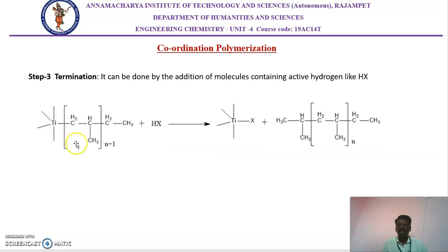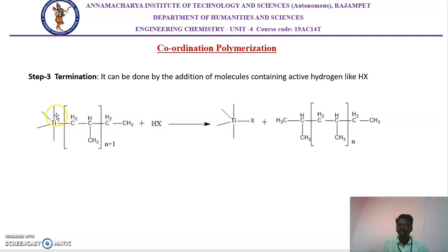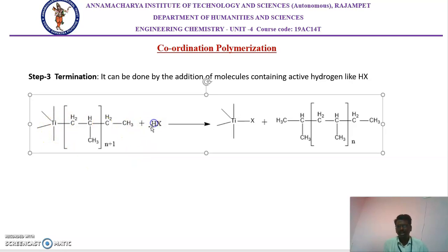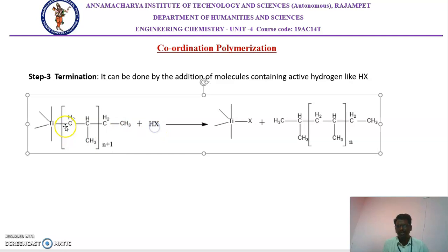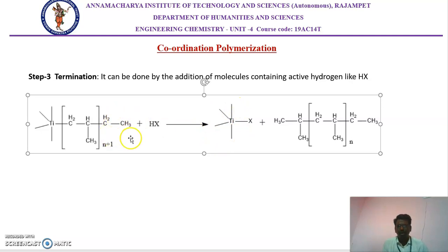The last step is termination. We terminate this reaction using hydrogen halides such as hydrochloric acid. The proton from the hydrogen halide replaces the titanium. The hydrogen replaces titanium, adds on to the CH₂ group and it becomes CH₃. The remaining titanium portion combines with the halide and is removed as titanium halide. In this way, the catalyst is also recovered.